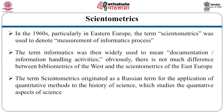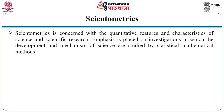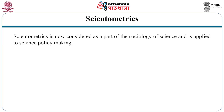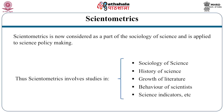Now let us discuss about scientometrics. The term originated as a Russian term for the application of quantitative methods to the history of science, which studies the quantitative aspects of science. Scientometrics is concerned with the quantitative features and characteristics of science and scientific research. Emphasis is placed on investigation in which the development and mechanism of science are studied by statistical and mathematical methods. Scientometrics is now considered as part of the sociology of science and applied to science policy-making. Thus, scientometrics involves studies in sociology of science, history of science, growth of literature, barriers of science, and science indicators.